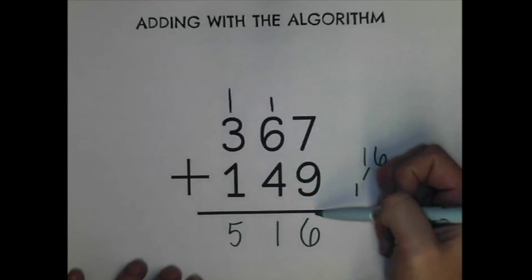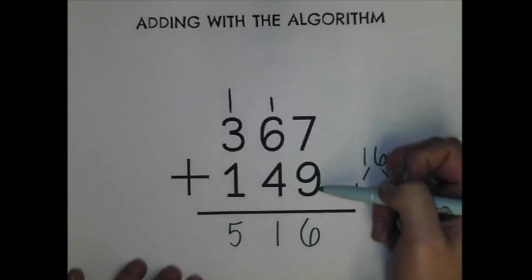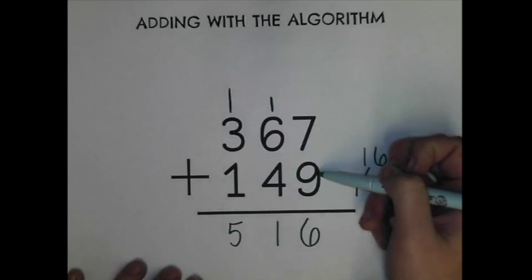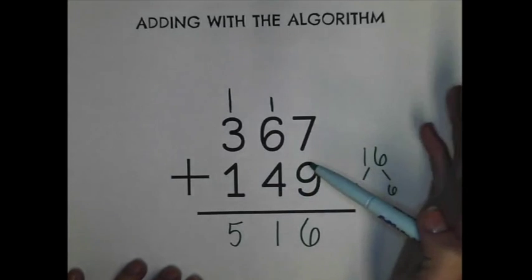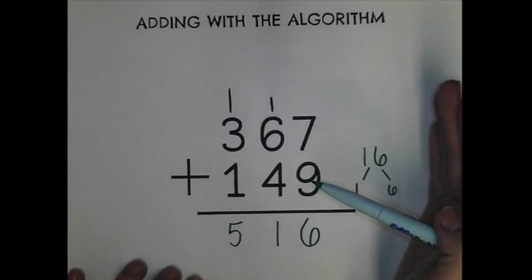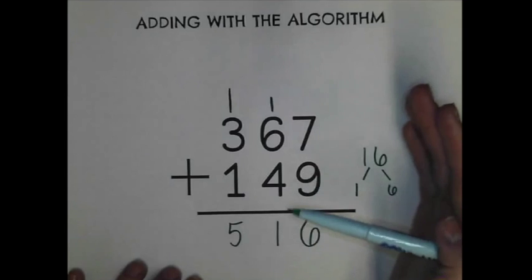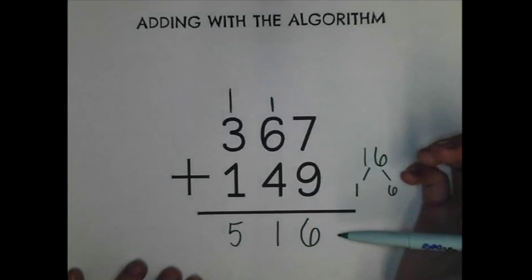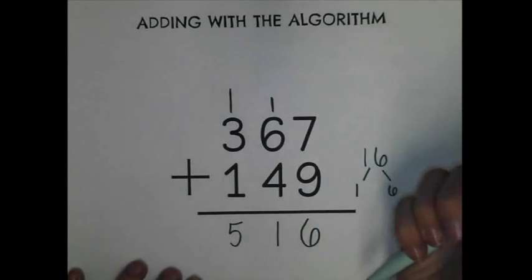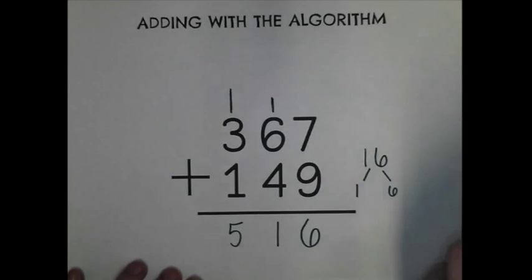Now, we've done a lot with estimating sums where we rounded the two addends and found our approximate answer, not our exact answer. We can use our estimating sums to help us find the reasonableness to see if our answer is reasonable or not. We learned that the word reasonable meant that it makes sense.